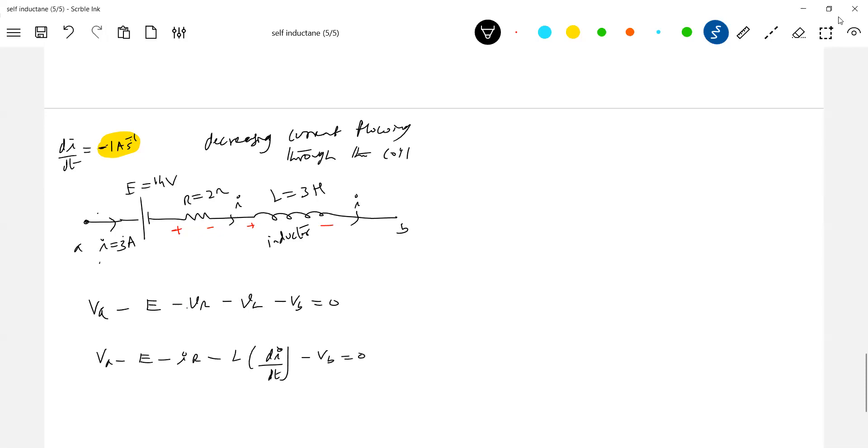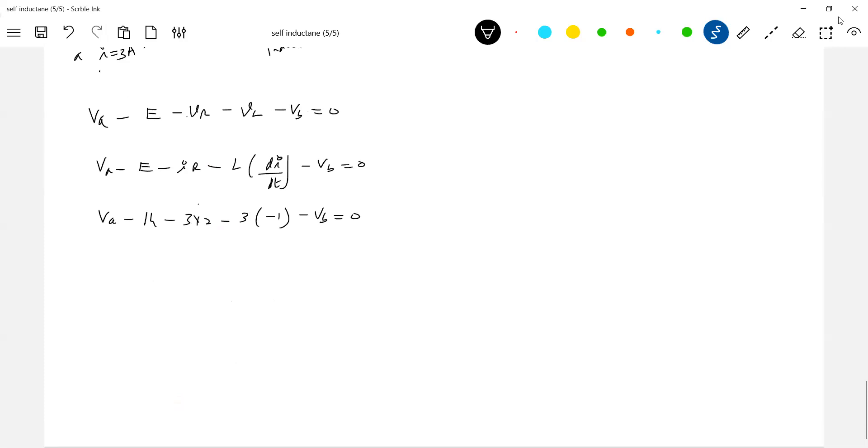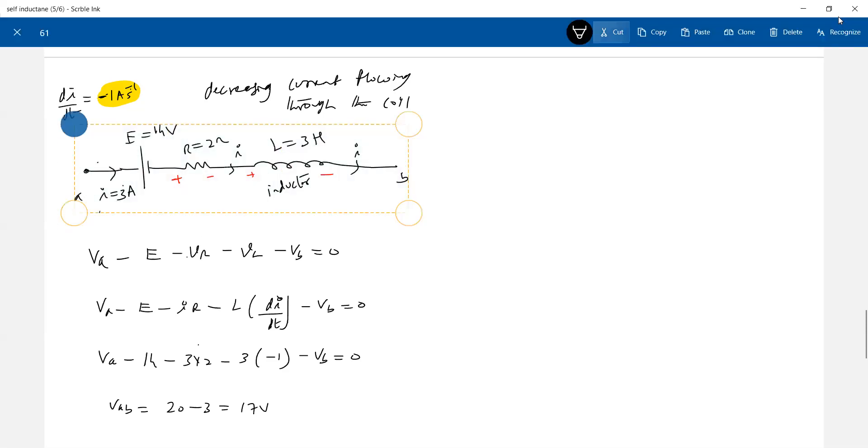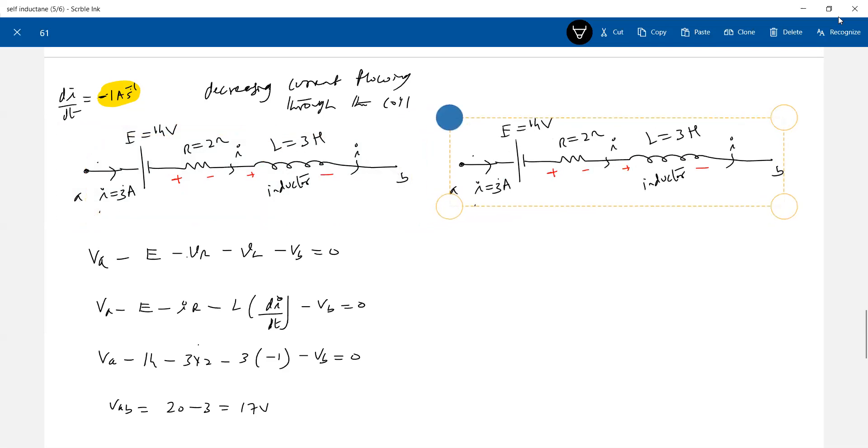VA minus E minus IR minus VL equal to 0. VA, E minus IR, L Di by dt with sign. I should substitute. It's a potential drop. This will be 14, this will be 2 into, 3 into 2. Self-inductance of coil 3. And it is minus 1. VAB equal to 20 minus 3, 17. Now, same thing if I replace this.